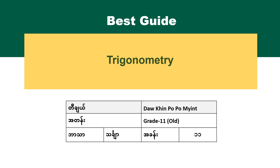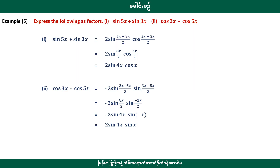In this case, we will have a basic formula for the first step. The first step is to express the following s-factor. The formula is 5a plus 3x.